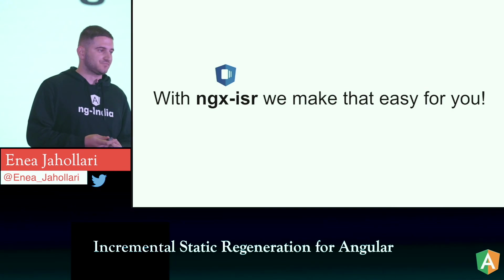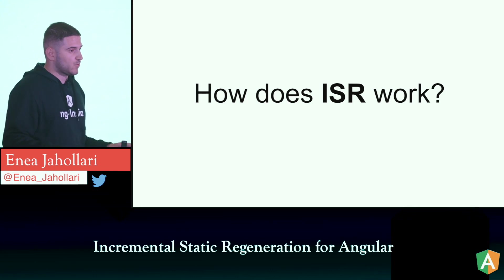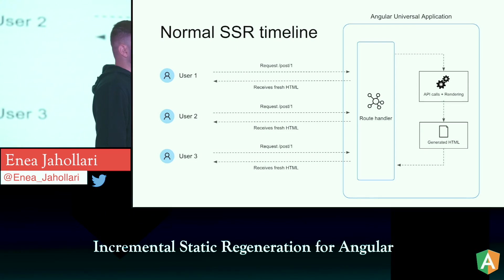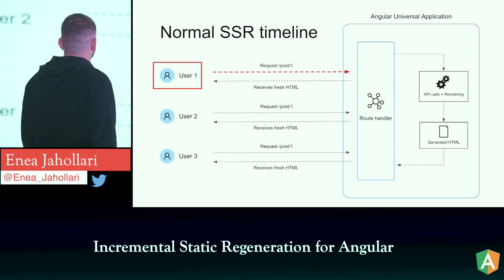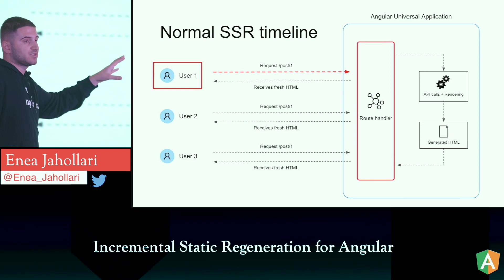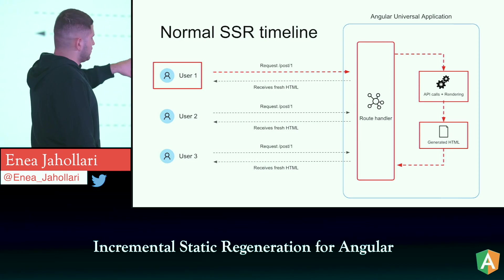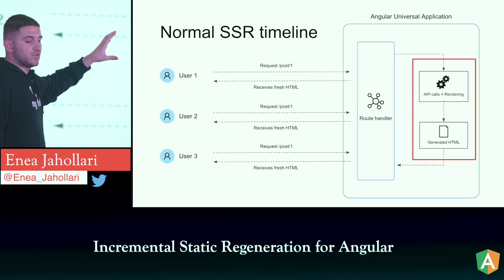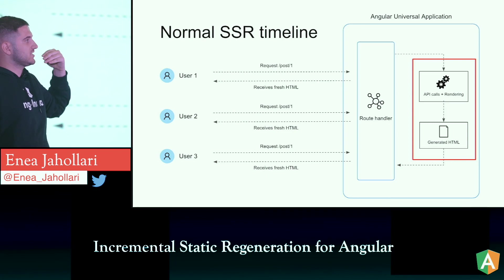Before learning how ISR works, let's look at normal server-side rendering. We have users making requests over time to the Angular application. The first user hits the route handler, which makes API calls, does the rendering, generates the HTML, and returns it. This happens for every user every time — all that work is repeated.